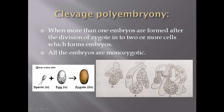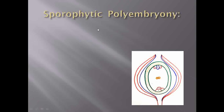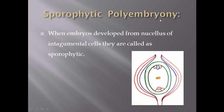The embryos formed due to cleavage of the zygote are all monozygotic ones — originating from a single zygote. The third type according to Rigor, Michelius, and Green is sporophytic polyembryony. Whenever embryo is formed from nucellar cells or integumental cells — which are sporophytic cells — the sporophytic cells participate in embryo development, hence this type is called sporophytic polyembryony.